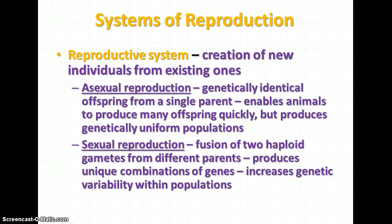The next system is the reproductive system — the creation of new individuals from existing ones. There are two main kinds of reproduction. Asexual reproduction produces genetically identical offspring from a single parent, which is advantageous for producing many offspring quickly, but results in genetically uniform populations. Sexual reproduction involves the fusion of gametes from two separate parents, producing a unique combination of genes and increasing genetic variability within populations.